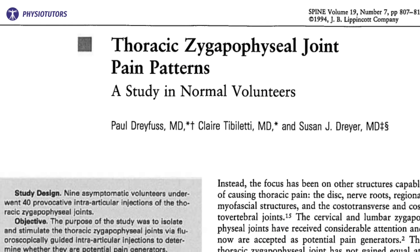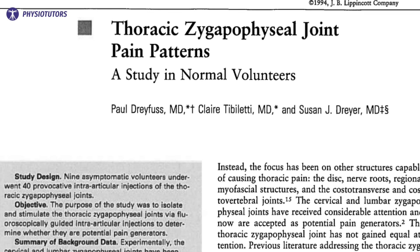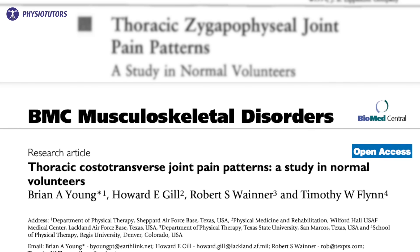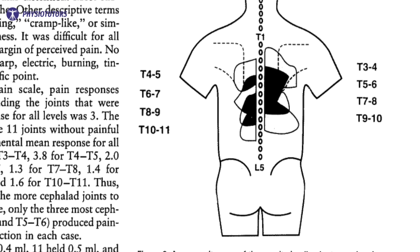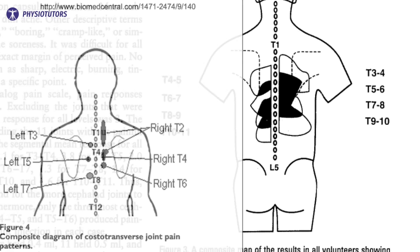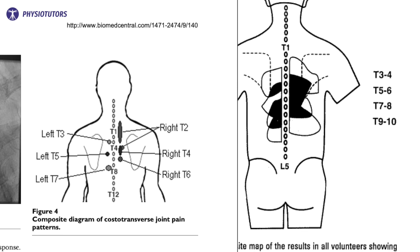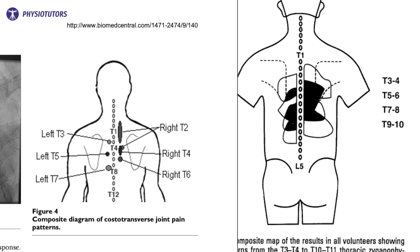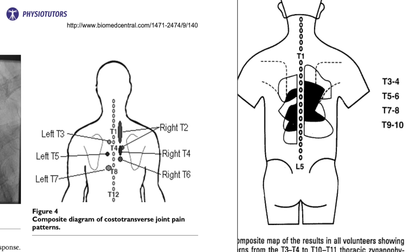Now let's examine if the pain might be coming from the thoracic spine. The story here is very similar to what we just mentioned about referred pain from the cervical spine. Studies by Dreyfus et al. in 1994 and Young et al. in 2008 show that referred pain from the thoracic facet joints and costo-transverse joints refers pain laterally, so basically the whole upper and mid thoracic area could potentially refer pain medial to the scapula.